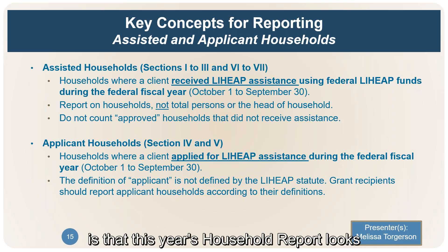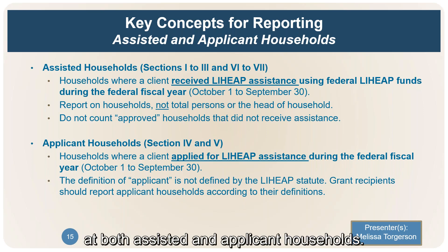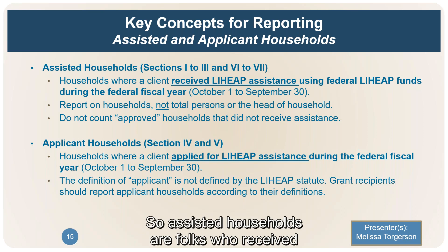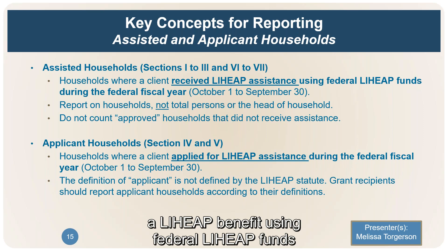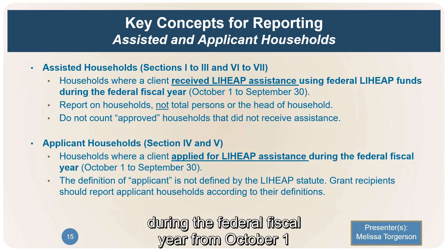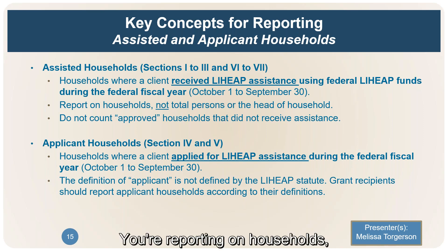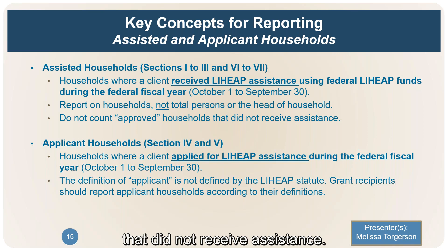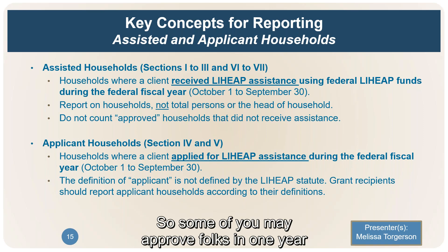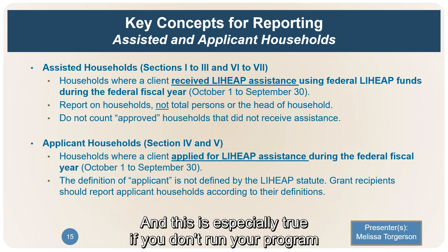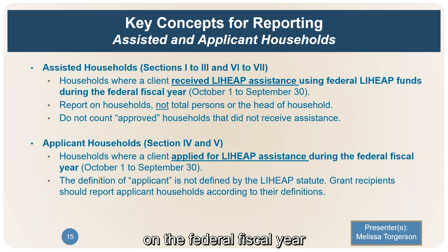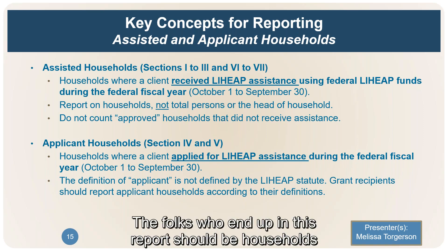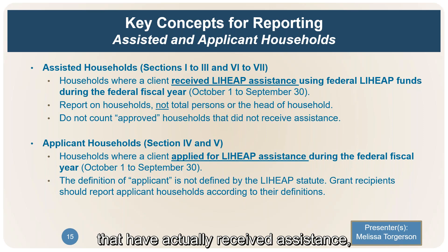This year's household report looks at both assisted and applicant households. Assisted households are those who received a LIHEAP benefit using federal LIHEAP funds during the federal fiscal year from October 1 to September 30. You're reporting on the household unit — not total persons or just the head of household. You should not be counting approved households that did not receive assistance. Some states may approve households in one year and not provide assistance until the following federal fiscal year. Only households that have actually received assistance should be in this report.